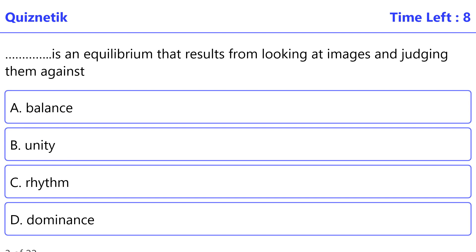It is an equilibrium that results from looking at images and judging them against our ideas of physical structure, such as mass, gravity, or the sides of a page.